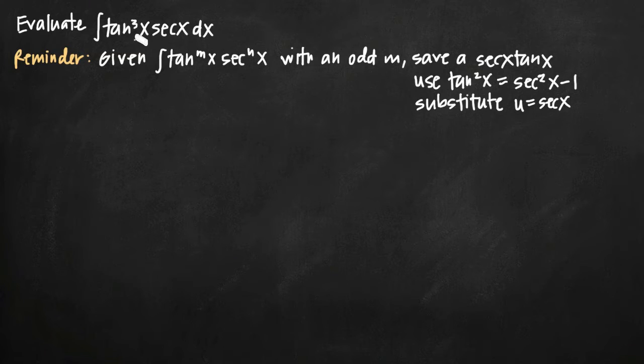So in our particular problem, we've been given tangent to the third of x times secant of x, in other words, secant to the first power of x. So we have m equals 3 and n equals 1.